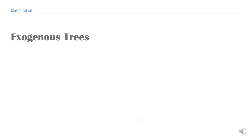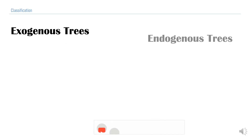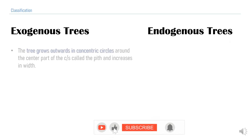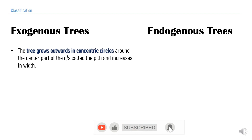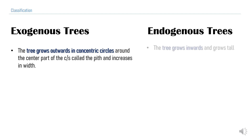Exogenous trees grow in the exterior direction — that is, outwards in concentric circles around the center part of the cross-section, the pith. So they increase by diameter, by width. Endogenous trees grow inwards and they grow tall. They are thin — coconut tree, bamboo, and cane are examples of endogenous trees.